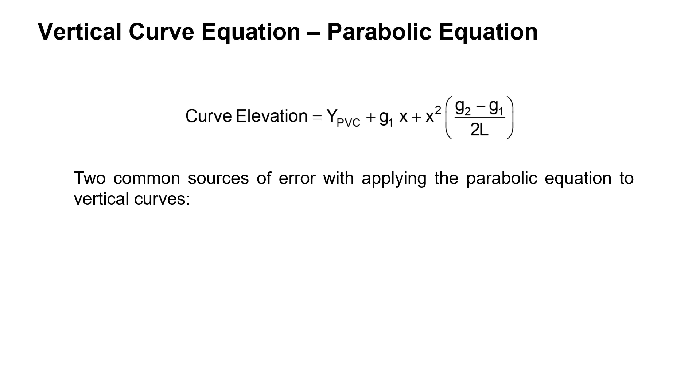There are two common sources of error when solving the parabolic equation for vertical curves. One is that grades need to be in percent. Grades should be put in percent form instead of decimal. So a grade of 3% should be input as 3, not 0.03.